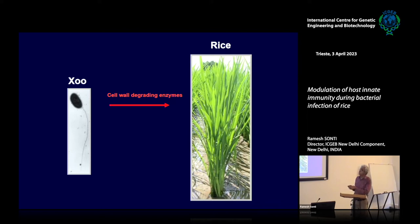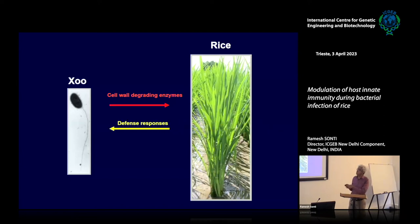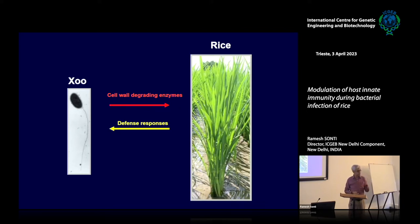We wanted to know whether the cell wall degrading enzymes that this bacterial pathogen secretes would also trigger immune responses in rice. Because we had these purified enzymes in hand, we could treat rice cells with them and see if an immune response was induced. And indeed, these enzymes that are important for virulence are also triggering defense responses in rice.